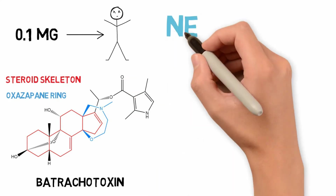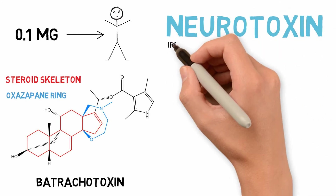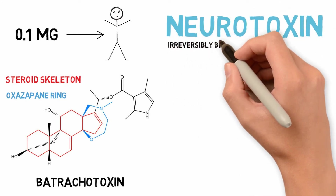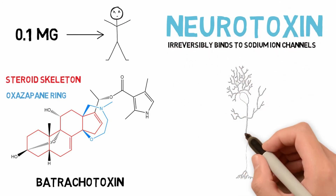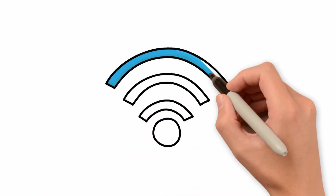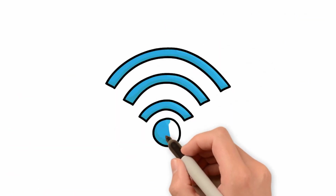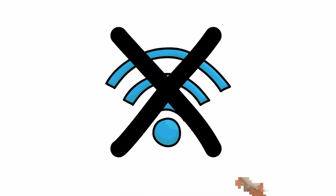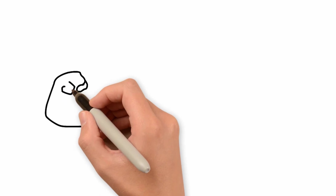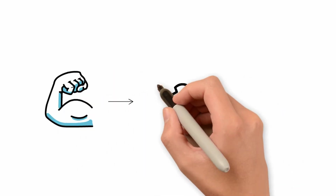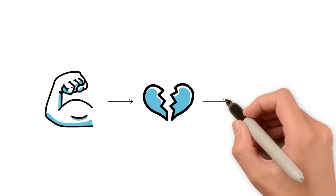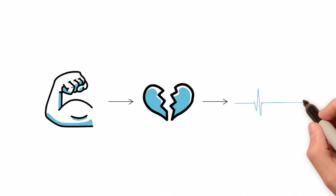It is a neurotoxin that irreversibly binds to sodium ion channels in muscle and nerve cells, jamming them open, blocking the signals, and causing muscles to contract, resulting in paralysis, cardiac arrest, and death.